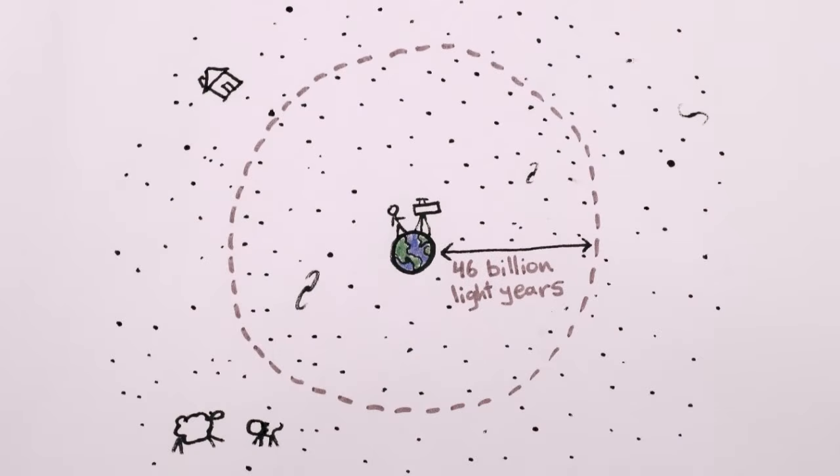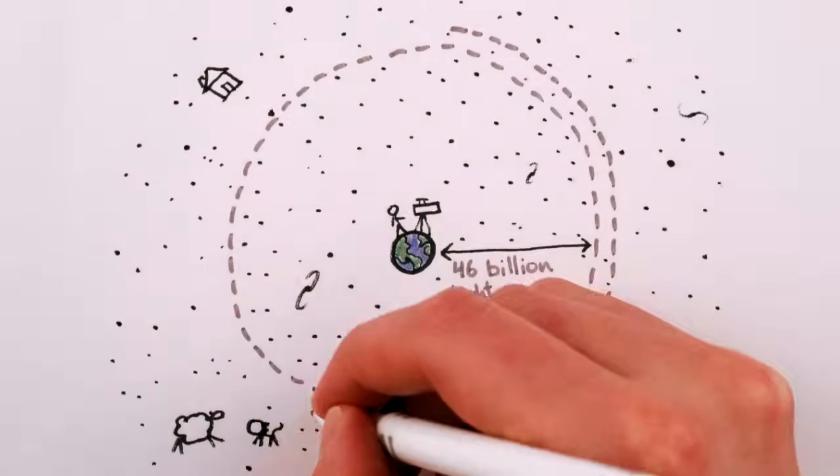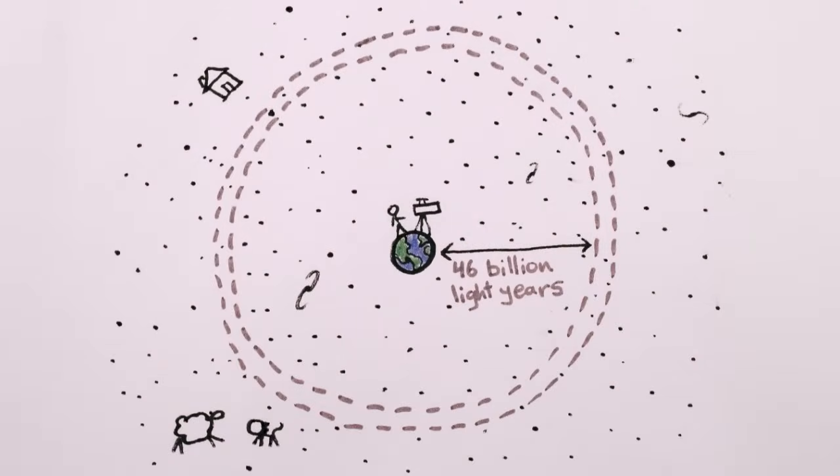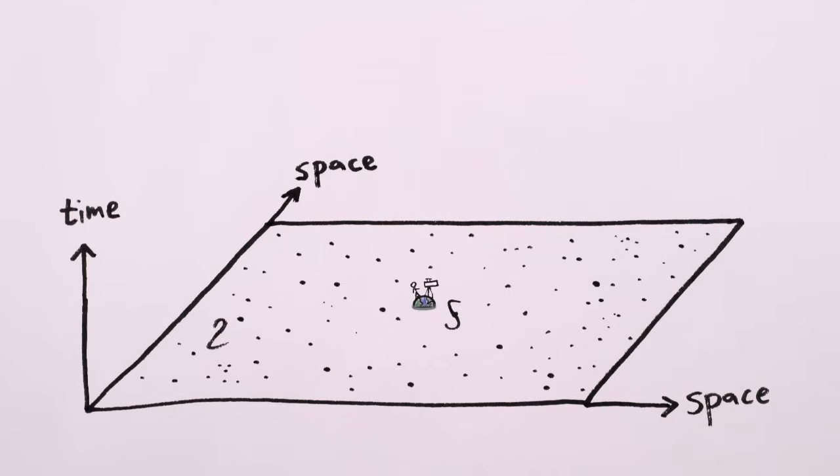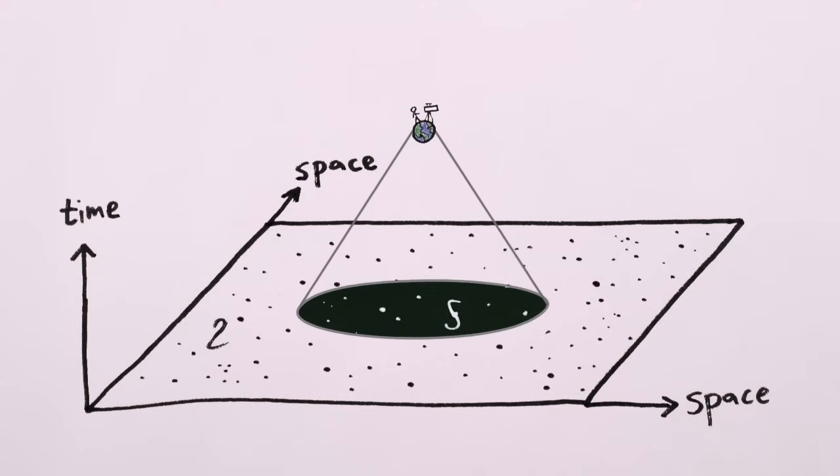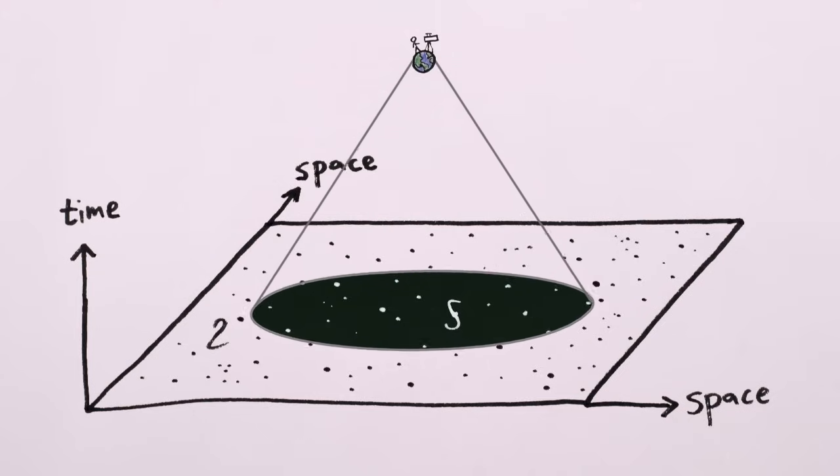But each second, we see new, even older light coming from slightly farther away, three light seconds farther to be precise. And so our view of the cosmos is literally getting bigger all the time. All we have to do is wait and watch as the universe ages and light from more distant places has the time to get to us.